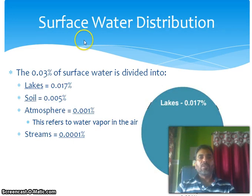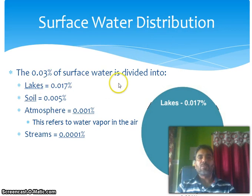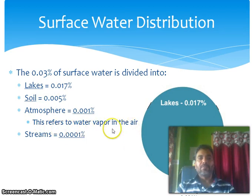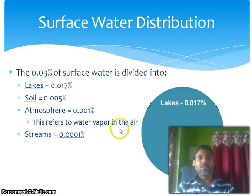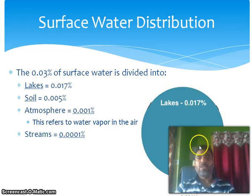Surface water distributions — the 0.0% of surface water is divided into lakes, soil, and atmosphere. Atmosphere refers to water vapour in the air, and steam.